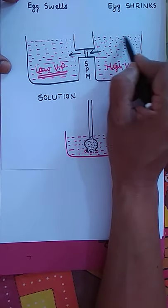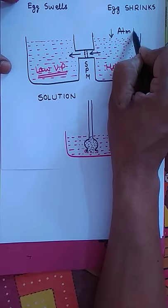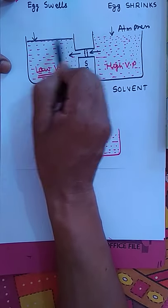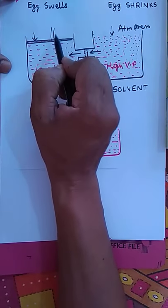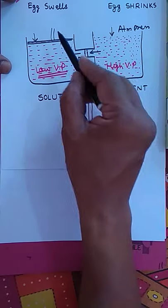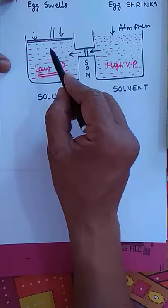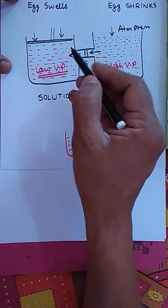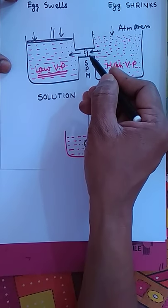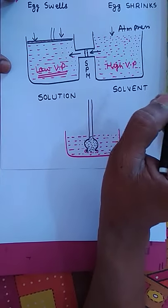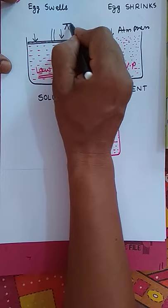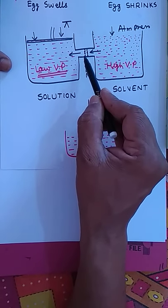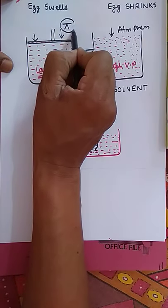Here, atmospheric pressure acts on both sides. If we apply some external pressure on the solution side, the process of osmosis is stopped. The pressure that stops the process of osmosis is called osmotic pressure. Suppose π amount of pressure is applied on the solution and the process of osmosis stops — that pressure is the osmotic pressure.